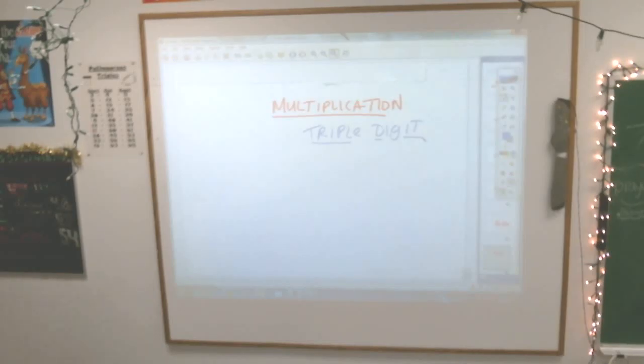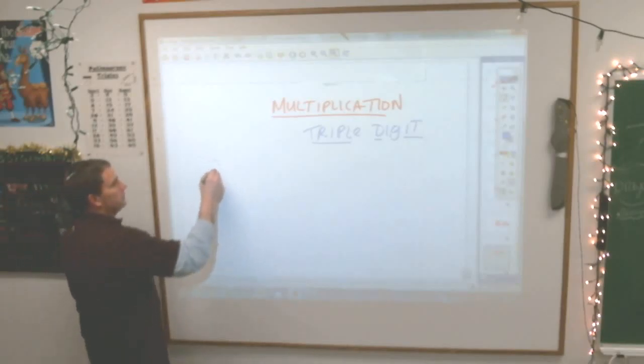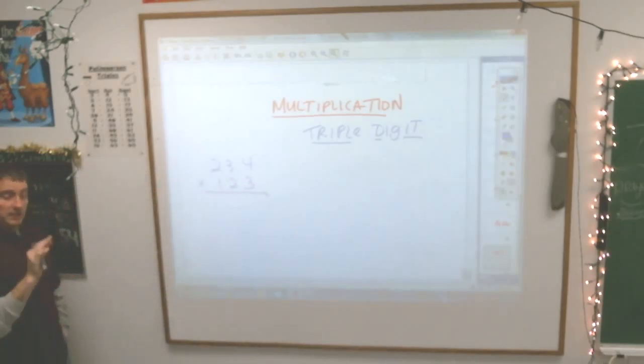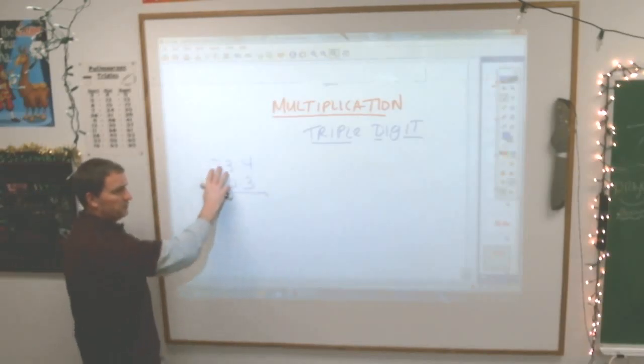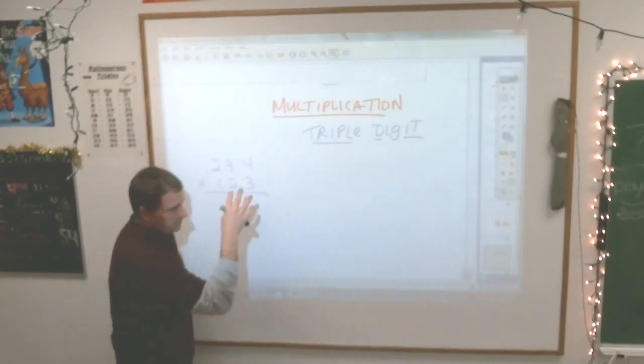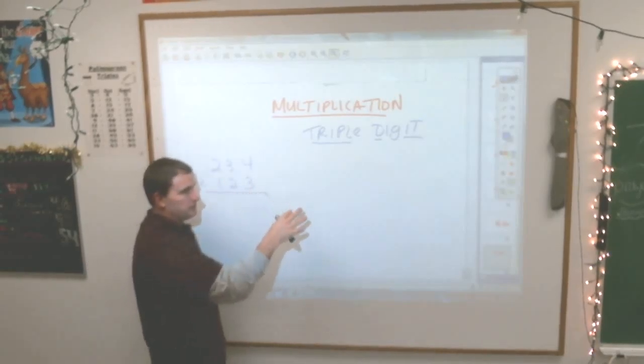Write down this problem, oh look, here's a good one. 234 times 123, I love this. Okay, now, just like with double digit multiplication, before we actually go through the algorithm for this, which makes it much simpler or just more organized I guess, you have to remember when we multiply these what we're doing. Remember that whole distributive property thing with double digit multiplication? The same thing is true with this.